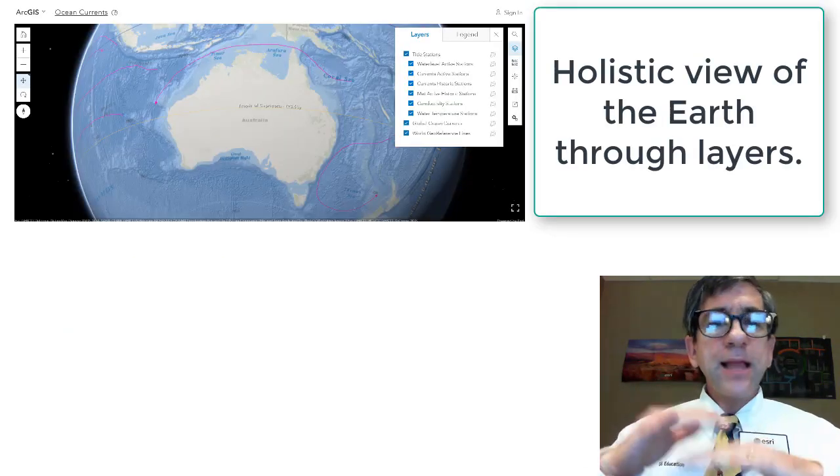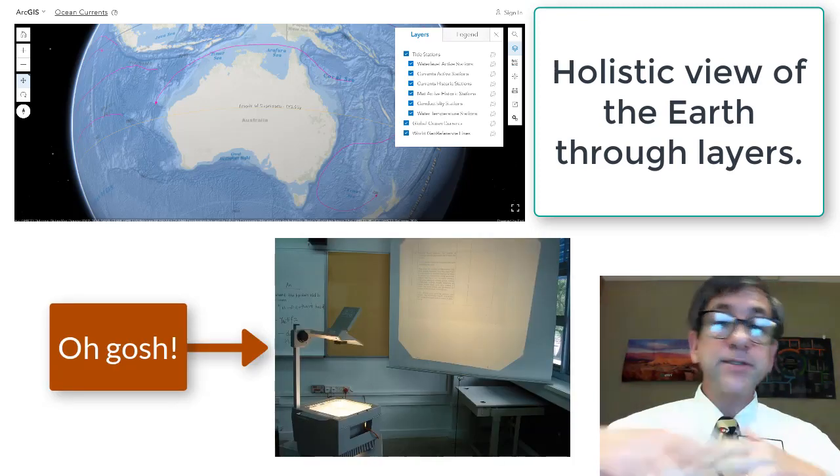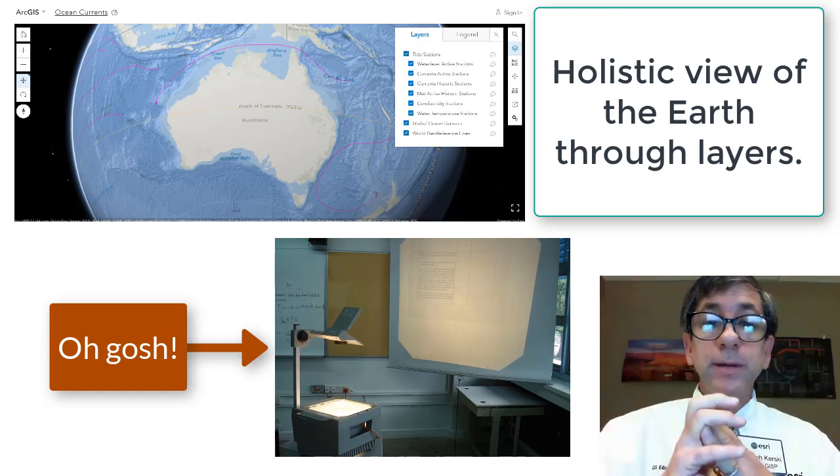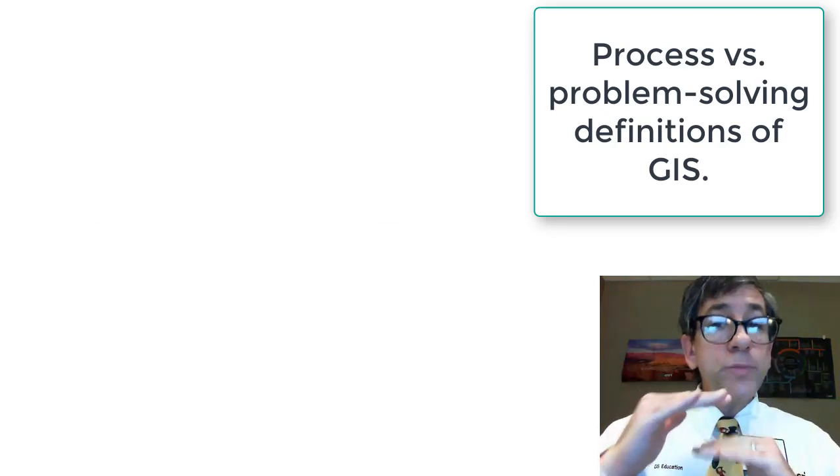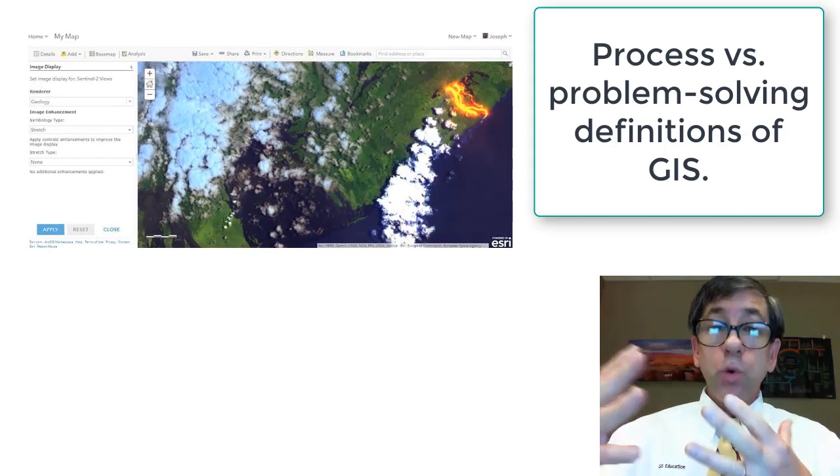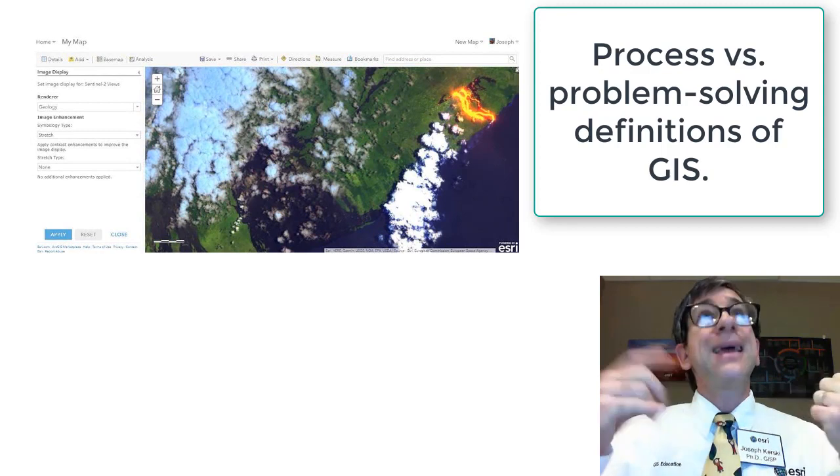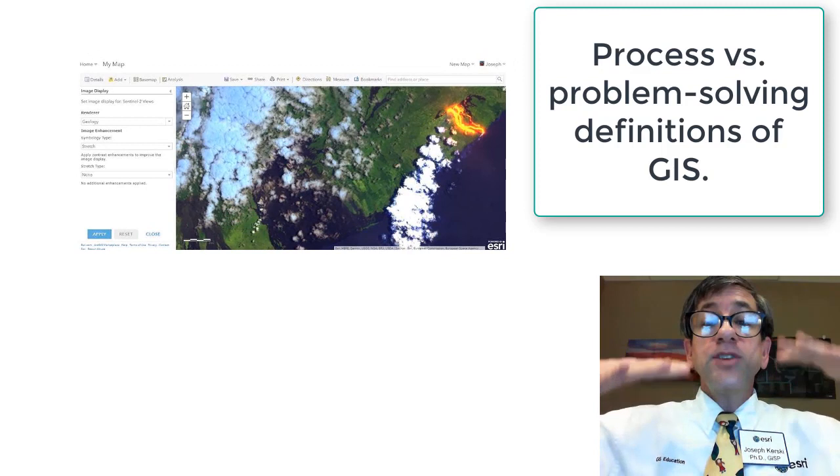By combining the spatial with the aspatial, we create a holistic view of the world. GIS data are analyzed in layers, think of the old transparencies that maybe you had in the classroom, which can cover such themes as land use, land cover, hydrography, zoning, ecoregions, transportation, elevation, climate, and more. The process-oriented definition of GIS is that a GIS is a computer-based system that provides for the collection, storage, analysis, and display of geo-referenced data. A problem-solving definition of GIS is a decision support system involving the integration of spatially referenced data in a problem-solving environment.